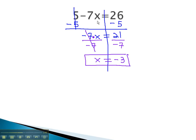Notice, negative 3 is the number that we could plug in for x to make this equation true. Negative 7 times negative 3 would be positive 21. Five more is 26.